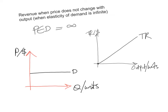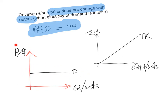How do we draw the revenue curves when price does not change with output? This means that price elasticity of demand is equal to infinity. Basically, the demand curve will be a straight horizontal line. Regardless of the output being produced, the price will not change — this is what a perfectly elastic demand curve looks like. As a result, the total revenue curve will be a straight line from the origin. As you produce and sell more output, your total revenue will also increase.